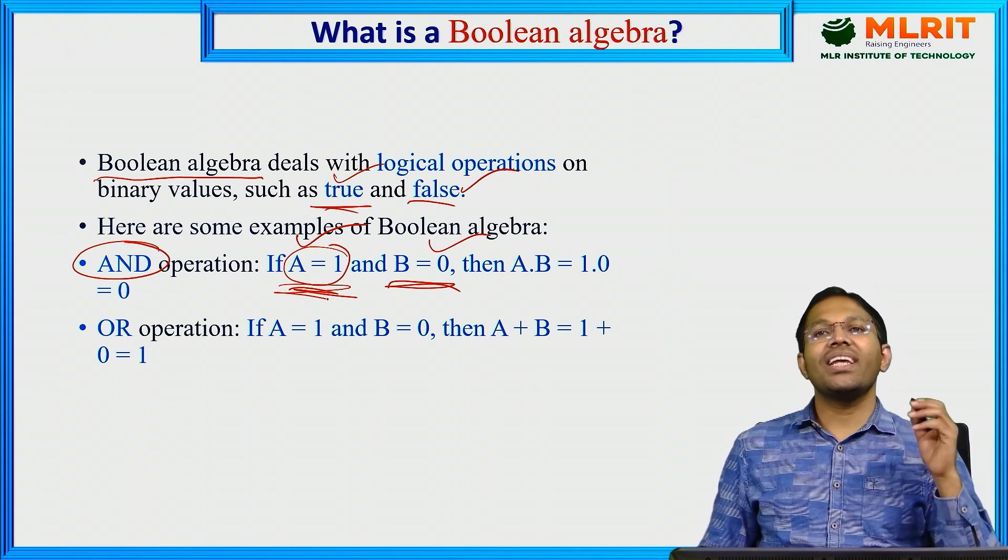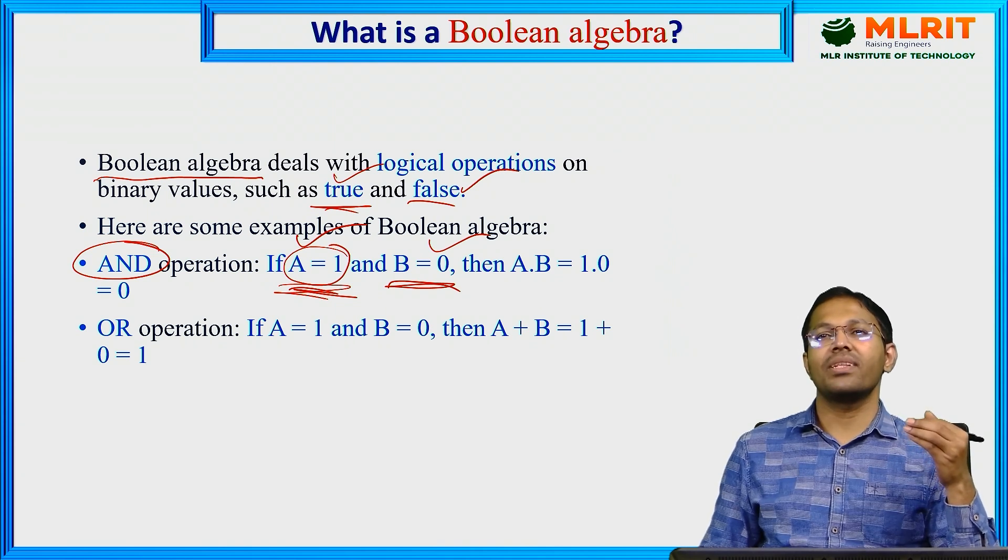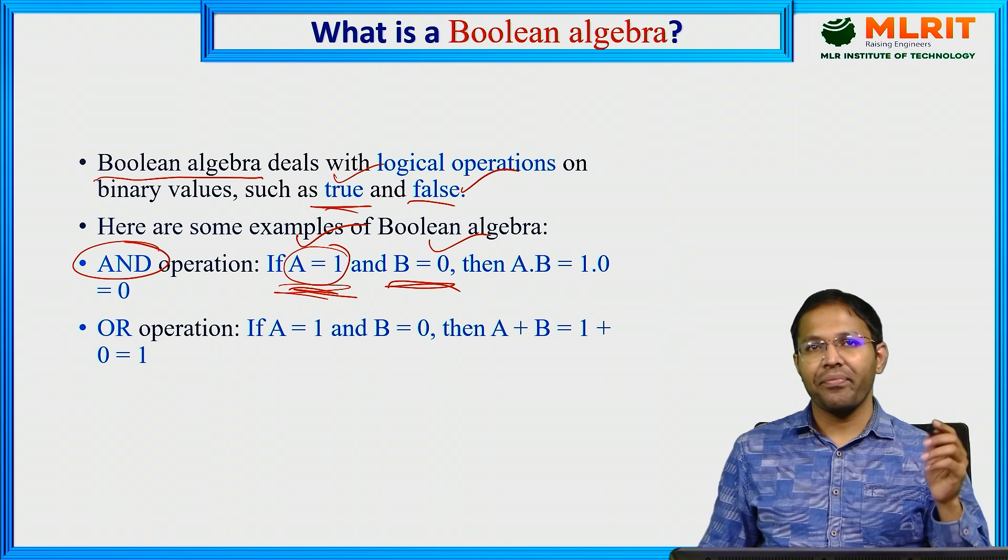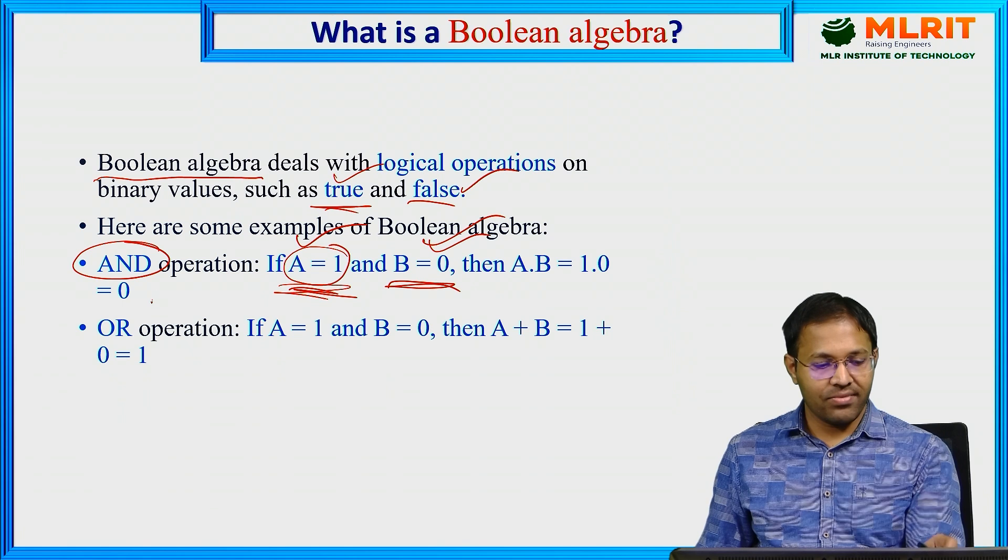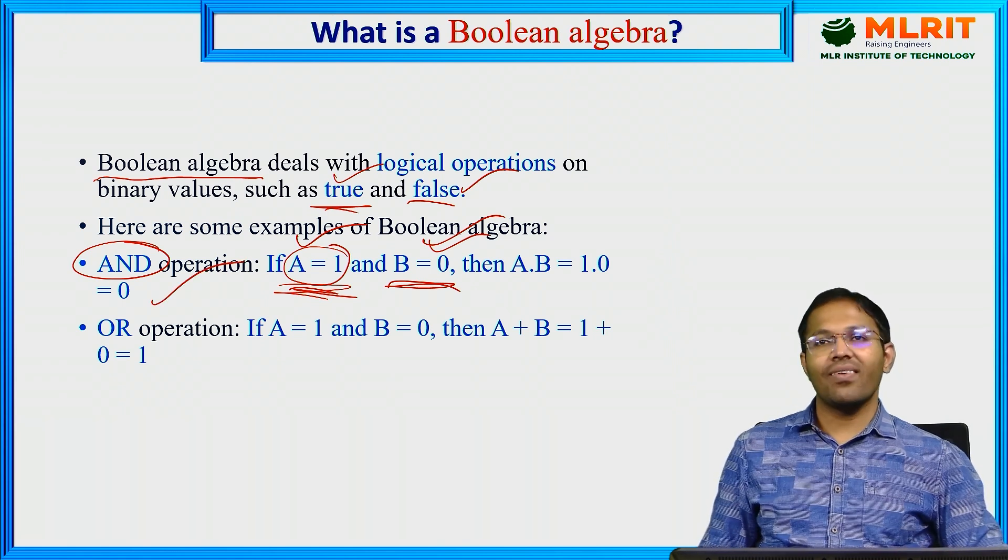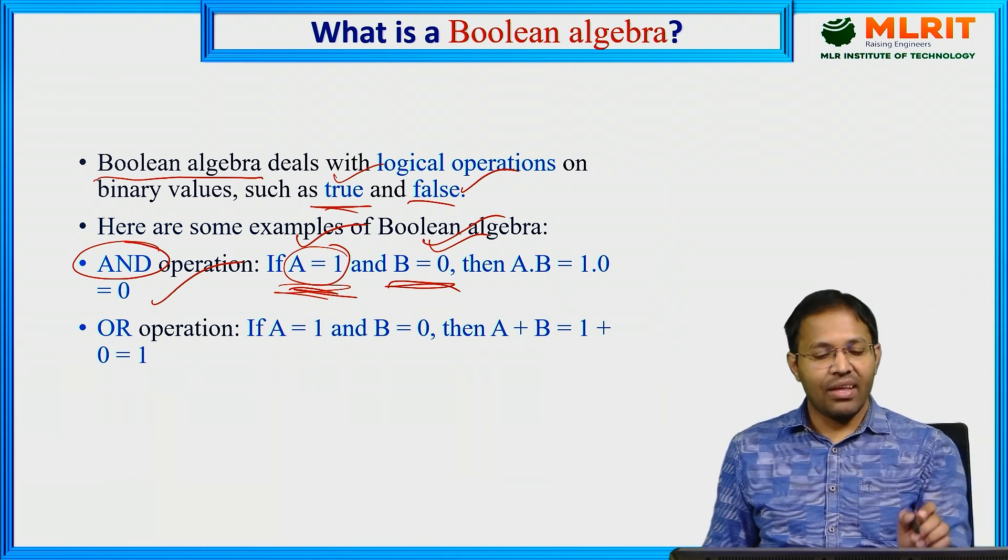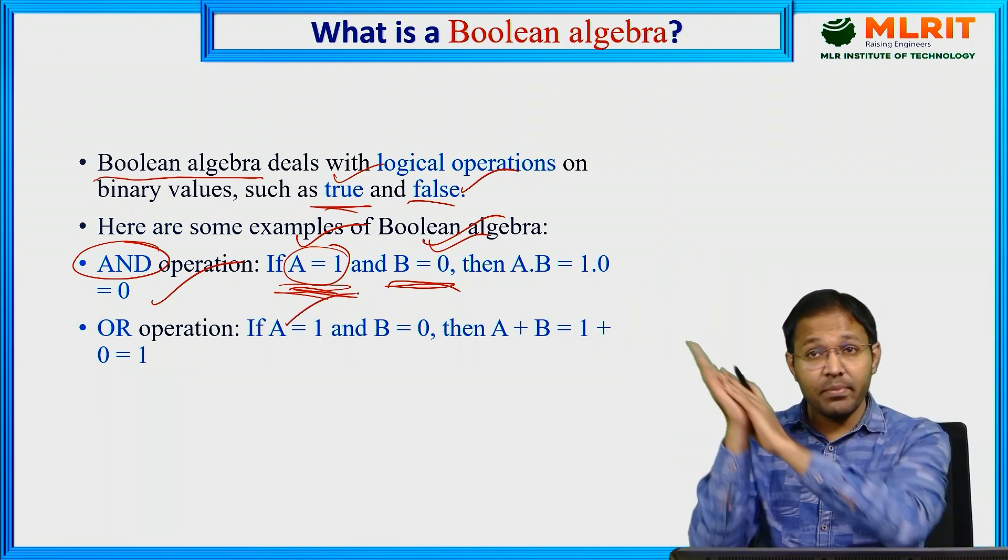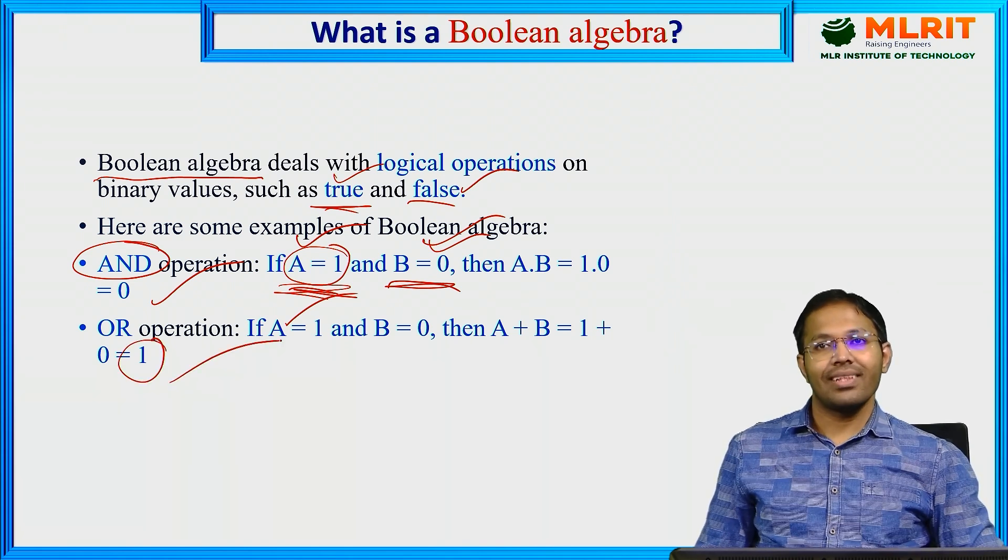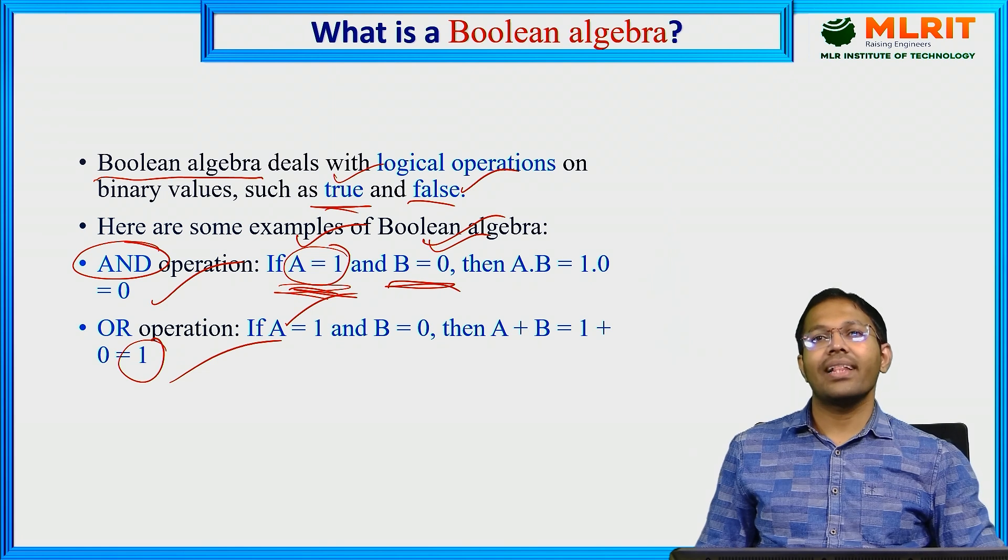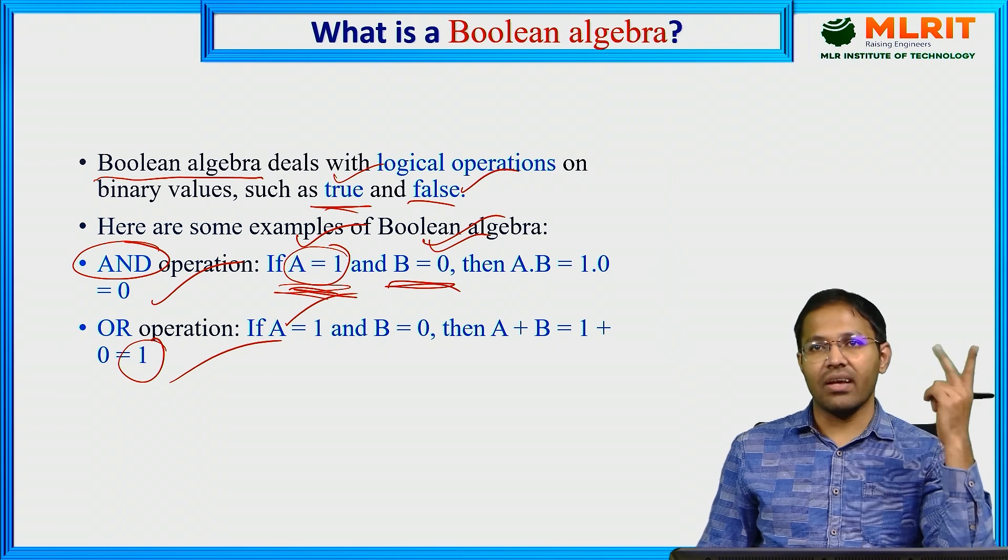Only if both the variables are true or if both the variables are 1, the output is 1. Here B is 0, any one variable is 0, the output should be 0. Hence we have a 0 here. Likewise, if I say A OR B, any one person meet me. If A meets me, even if B does not meet me, still the output is 1. That is an example of the operations within Boolean algebra. We have seen AND operation, we have seen OR operation.